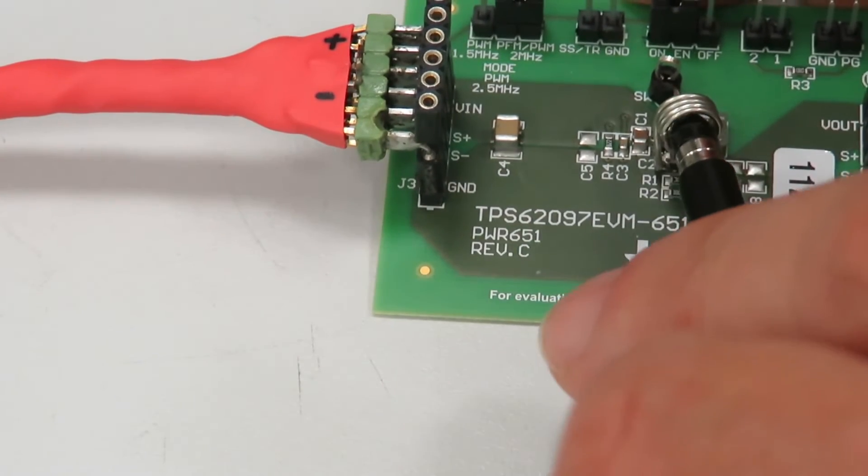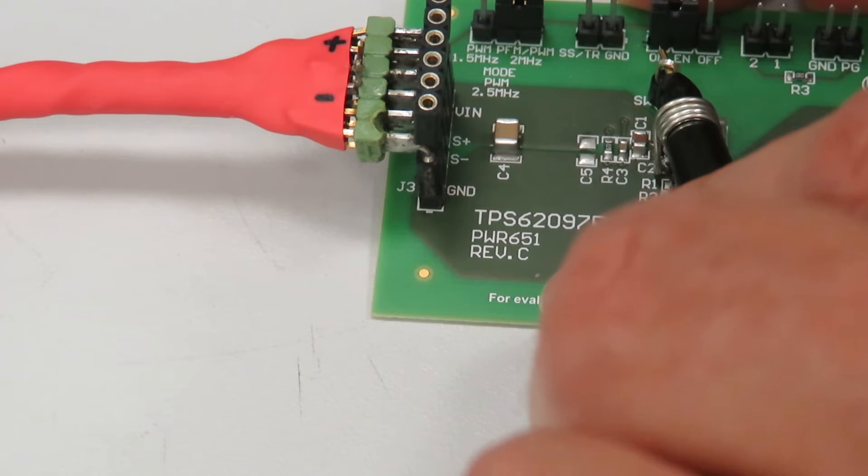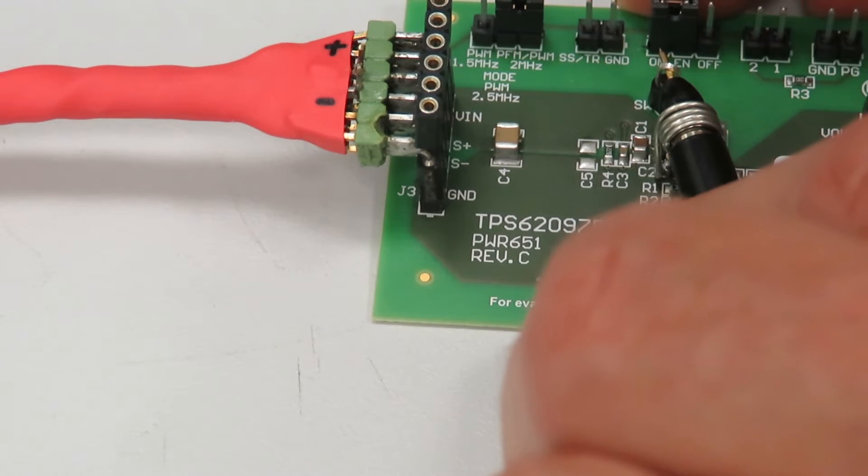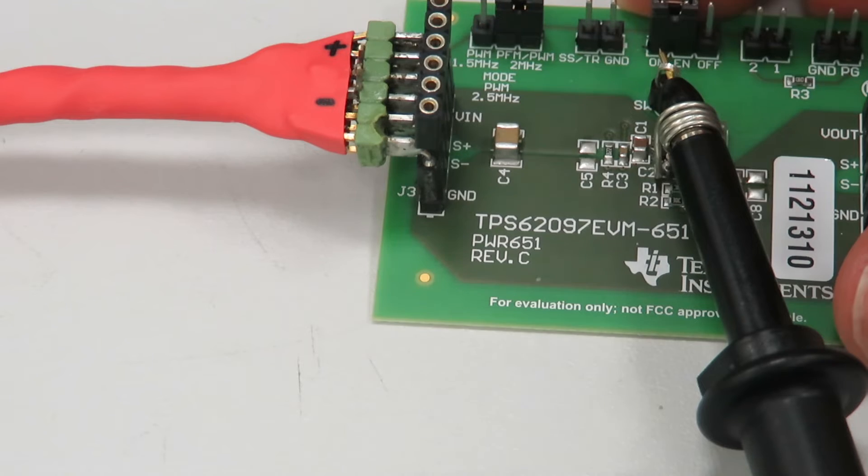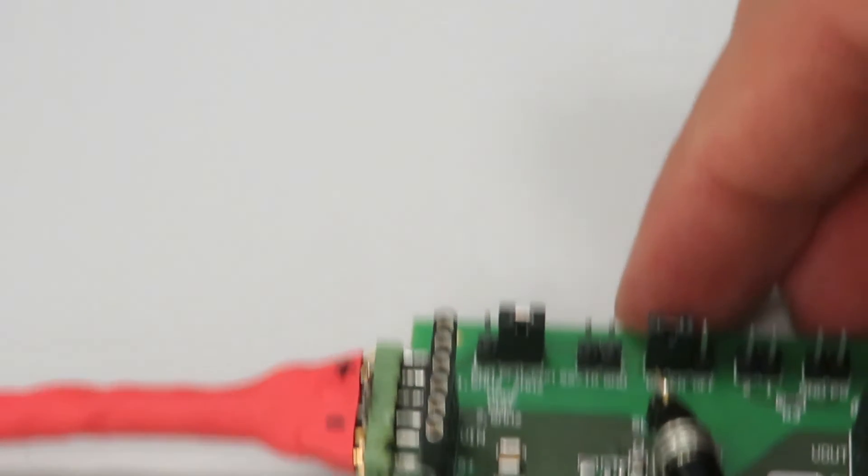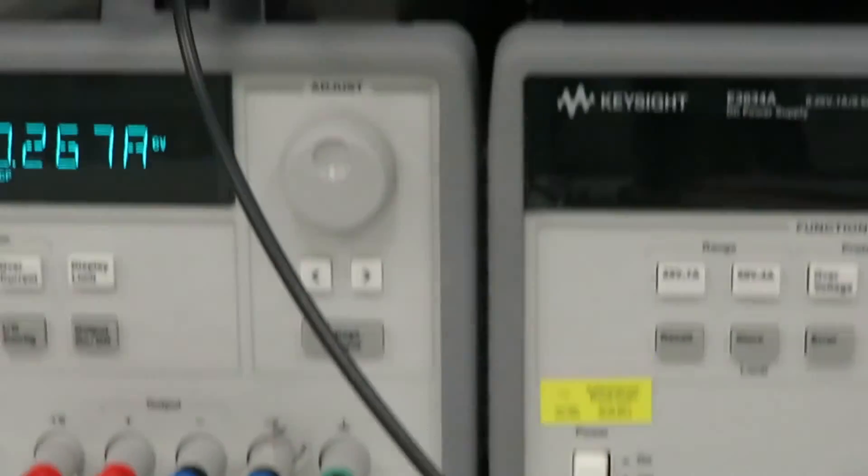So the tip of the scope probe we connect to the test point that is connected to the switch node of the DC-DC converter. The ground spring is connected to the output capacitor power ground. Now let's have a look at the oscilloscope.